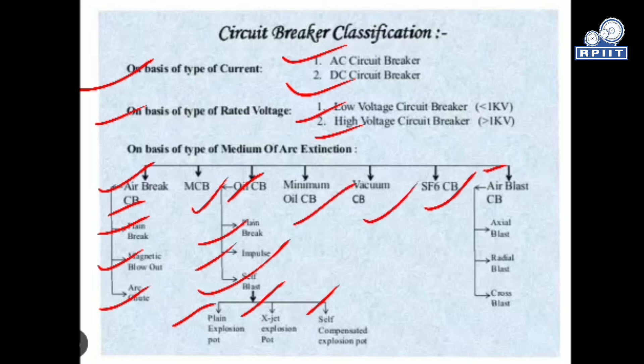The minimum oil circuit breaker uses a minimum quantity of oil for the arc quenching process. In a vacuum circuit breaker, vacuum is used as the arc quenching medium. The SF6 circuit breaker — sulfur hexafluoride circuit breaker — uses SF6 gas as the arc quenching medium.